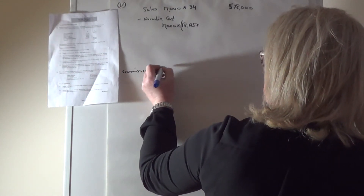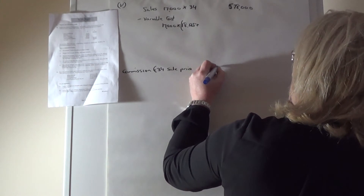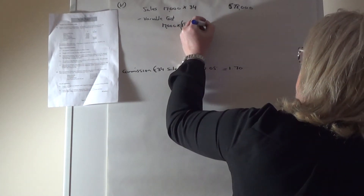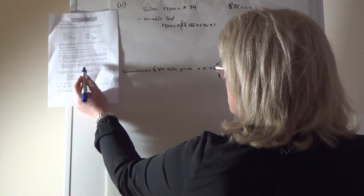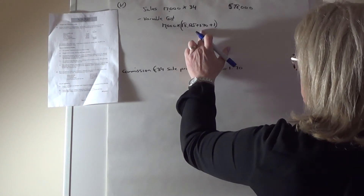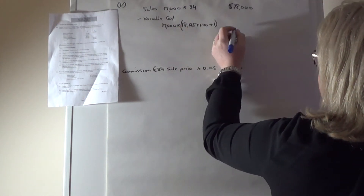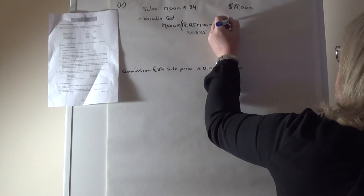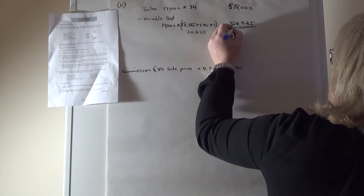The commission is 5% of the 34 euro selling price, which is 1.70 per unit. Adding the 1 euro extra packaging gives additional variable cost of 2.70 per unit. So the new variable cost per unit is 18.125 plus 2.70, totalling 20.825. Multiplying 17,000 by 20.825 gives variable costs of 354,025.